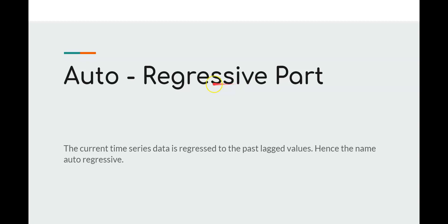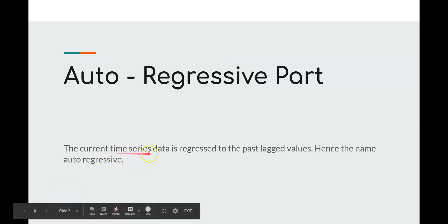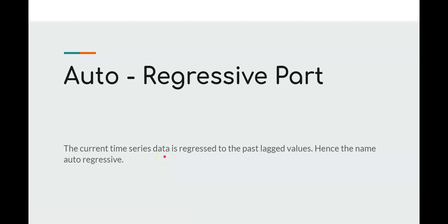Don't confuse regression with regressive — they refer to the same thing. In time series, what we do is auto regress. The current time series data, represented as yt, is written as the linear combination of previous timestamps: yt equals beta_0 plus beta_1 times y(t-1) plus beta_2 times y(t-2), and so on up to a certain point in the past. How many past values to consider is something we need to figure out.